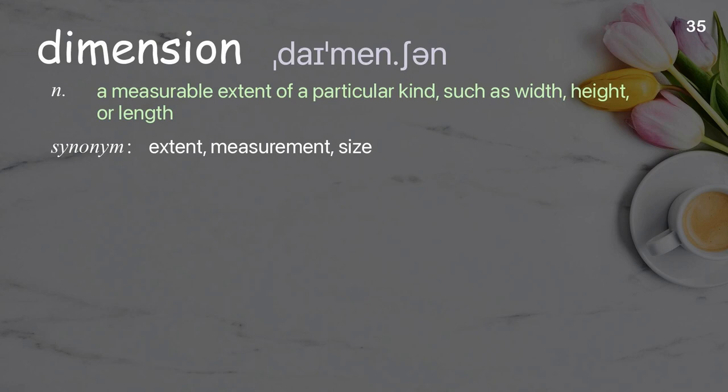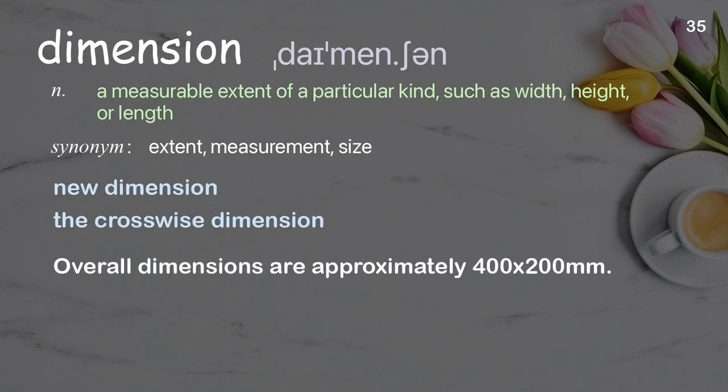Dimension: a measurable extent of a particular kind, such as width, height, or length. Examples: new dimension, the crosswise dimension. Overall dimensions are approximately 400 by 200 millimeters.